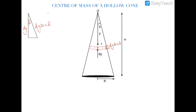The area dA of the elemental ring will be length times width. The length of the ring will be 2πr and the width will be the slant width, because the ring lies on the slant surface of the cone. So the slant width of the ring will be dy sec theta.